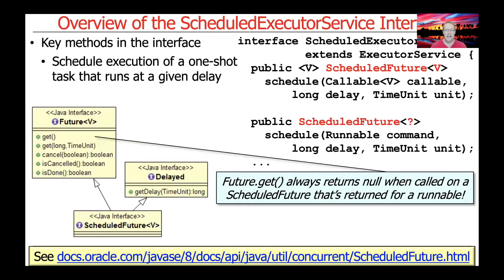The ScheduledFuture implements the Future interface and also the Delayed interface, which allows you to learn more about what's going on rather than just being able to get values or check if it's been canceled or done. If you call future.get() on a timer scheduled using Runnables, you'll get back null because there is no intended return value. Whereas if you use a Callable task, you'll be able to get back a result.